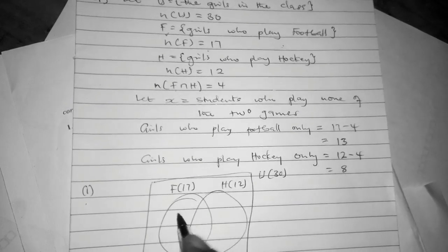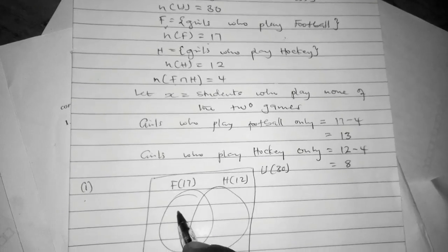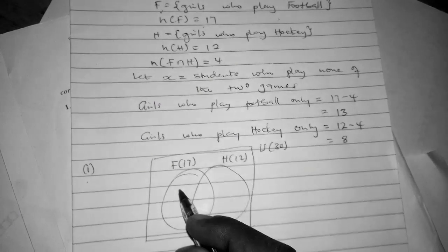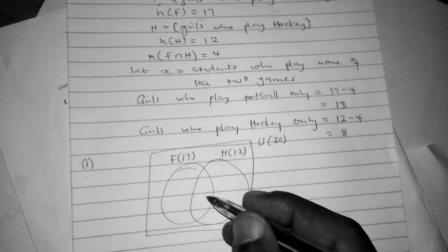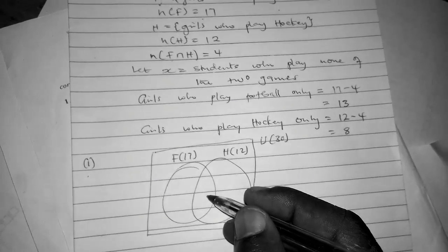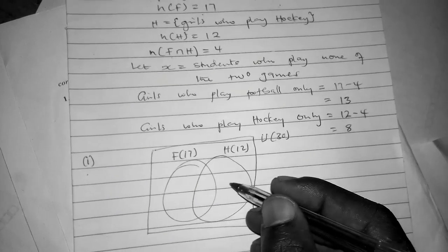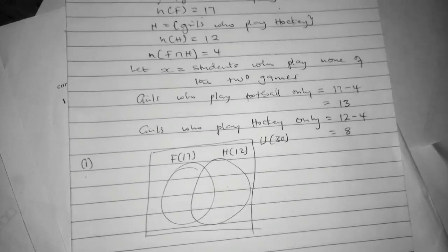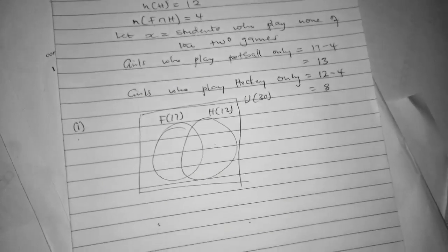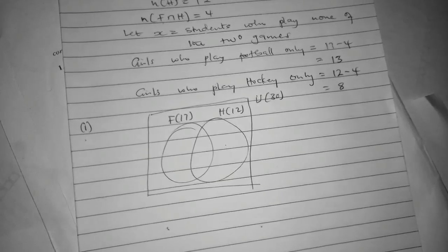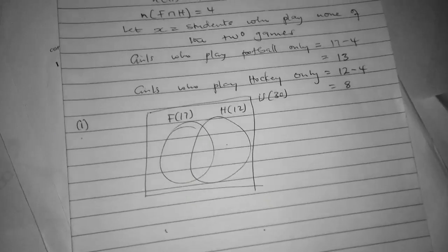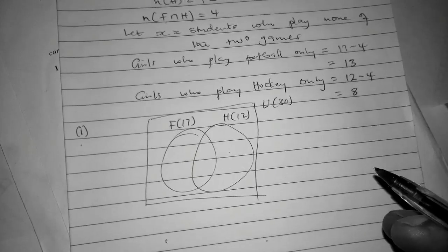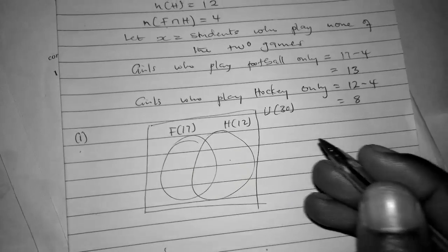This portion is for those who play only football, the middle one is for those who took part in both games, and the third portion is for those who took part in only hockey. Around the two circles is for those who do not take part in any activity.